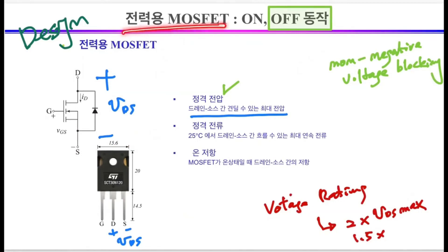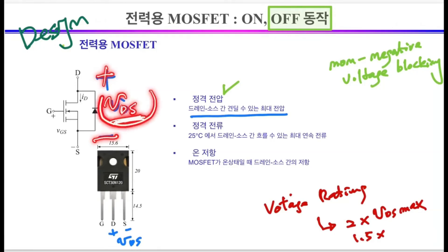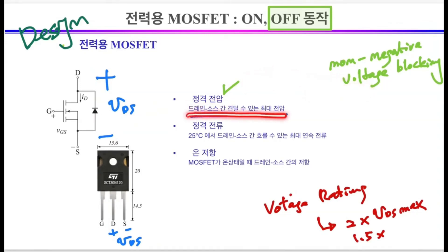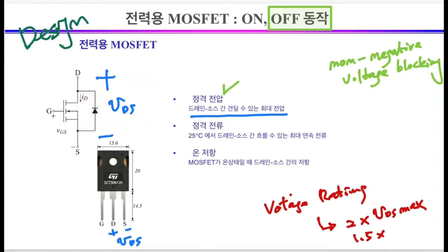In this chart, we will look at what factors should be considered when selecting a MOSFET. First, when the MOSFET is turned off, voltage may be applied between the drain and source terminals. The voltage that the MOSFET can withstand may vary depending on the device. The rated voltage of the MOSFET is the maximum voltage the MOSFET can withstand without being destroyed — the maximum voltage that can be tolerated between drain and source. Since there is an internal diode, minus voltage cannot be applied. The rated voltage will be a very important consideration when selecting a MOSFET.